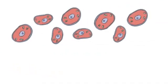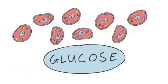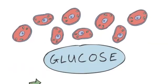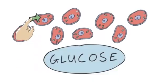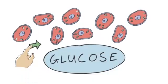The body's cells need a constant supply of energy. This comes from glucose carried around the body dissolved in blood plasma. Blood glucose concentration is very important and it must be kept within narrow limits. Not too high, not too low. Round about there.